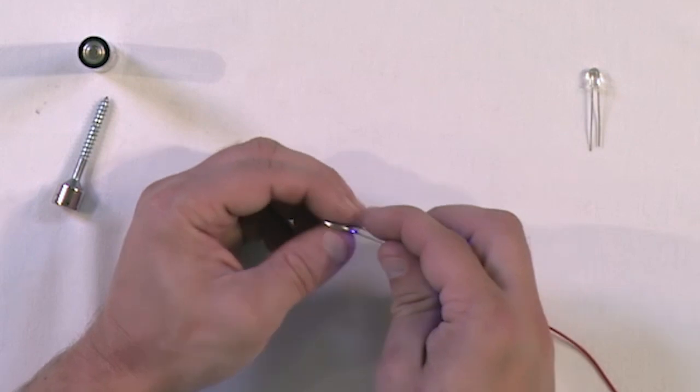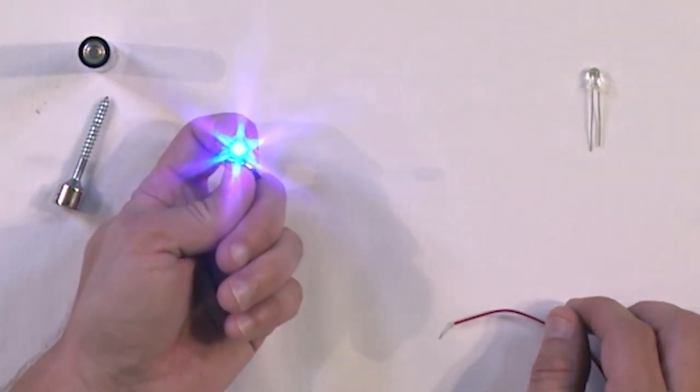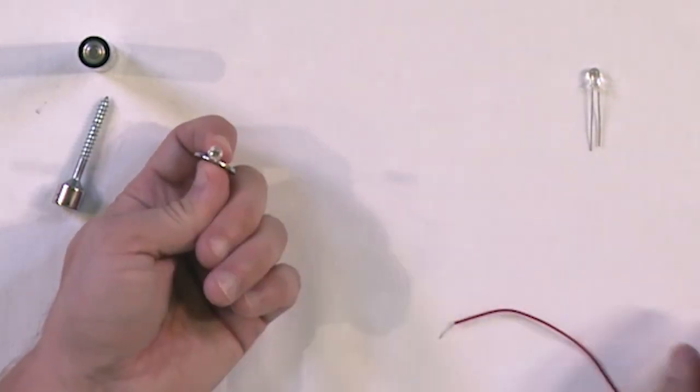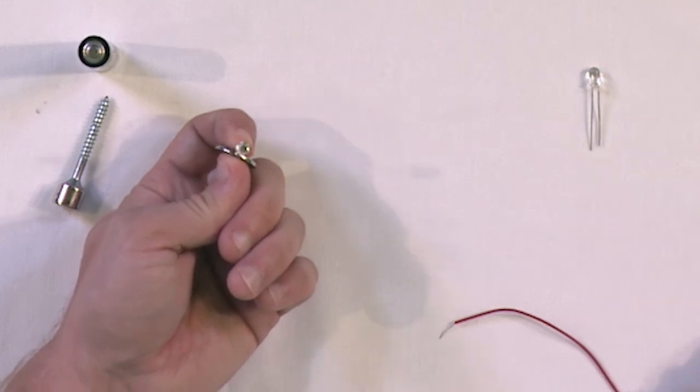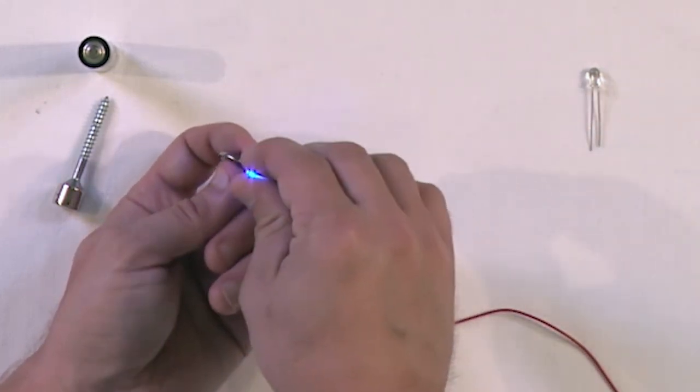Now if you hook this guy up in the proper direction, you can see that you have a blue light that goes in there. Now if you accidentally hook the LED up backwards, nothing will happen. LEDs act as one-way valves for electricity. Just flip it over until you see the light coming out.